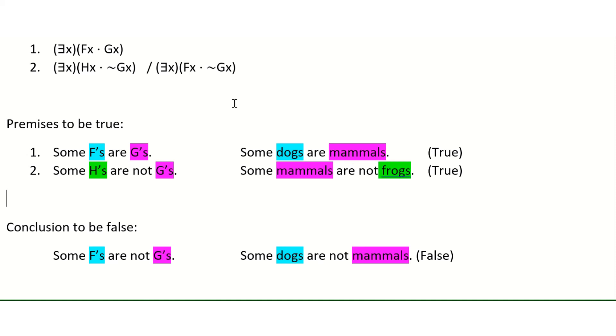And then just as a big picture comment, counterexamples do always work, but they are really difficult and just trickier to come up with as the arguments get more complicated. Typically, you will only see the counterexample method used in arguments that are relatively simple, like this one, arguments that use standard form generalizations because that's generally how we talk in ordinary language.